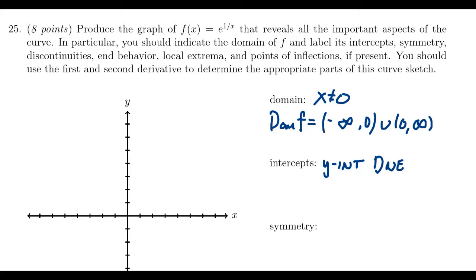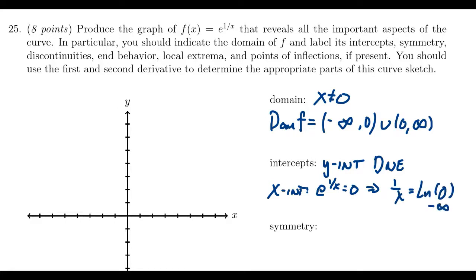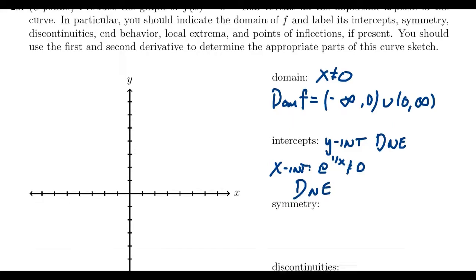What about x-intercepts? The x-intercepts occur when the function equals 0, so we set e to the 1 over x equal to 0. But exponentials can never equal 0. If you switch it to logarithmic form, you'd get the natural log of 0, which is negative infinity — it does not exist. So e to the 1 over x doesn't equal 0, and therefore our x-intercept does not exist.